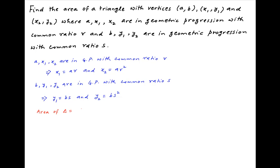Now, the area of the triangle in terms of the coordinates of the triangle is equal to half times the determinant, with a, b being the coordinates of the first point, x1, y1 being the coordinates of the second point, and x2, y2 being the coordinates of the third point — making up the first two elements of each row and then 1 making up the third column.